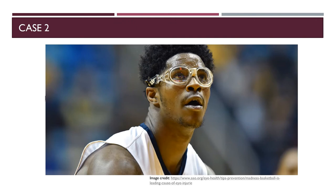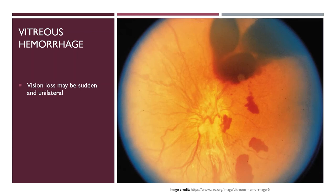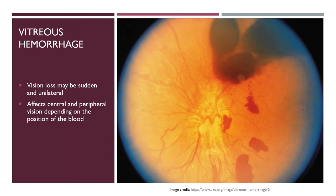Case two: an 18-year-old man goes up for a layup in basketball and gets hit in the right eye with an elbow, complaining of sudden vision loss. Vitreous hemorrhage is a cause of sudden vision loss, typically unilateral, and often related to trauma or abnormal blood vessels growing in the retina from diseases such as diabetes causing chronic ischemia. On direct ophthalmoscopy, one may see blotches and blobs of blood blocking the view to the retina. The location of these blobs affects whether central or peripheral vision is affected.